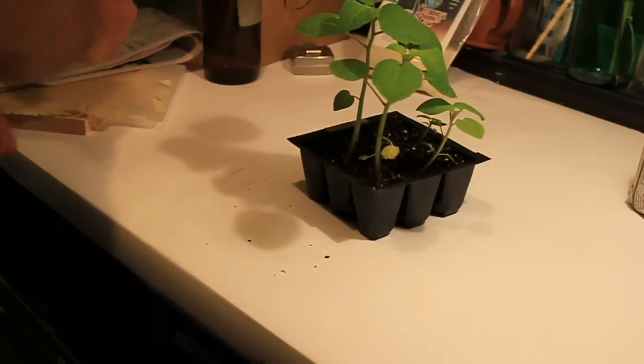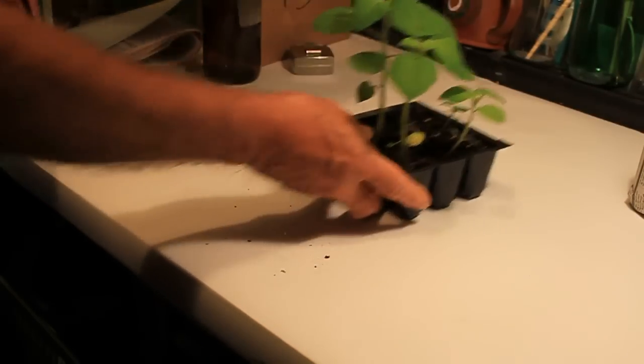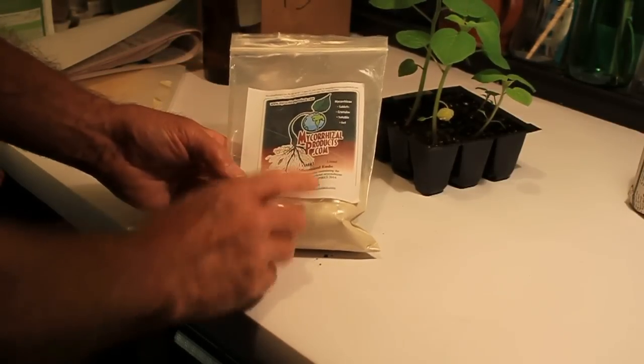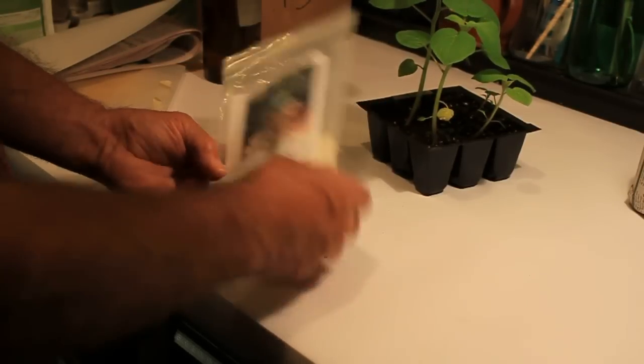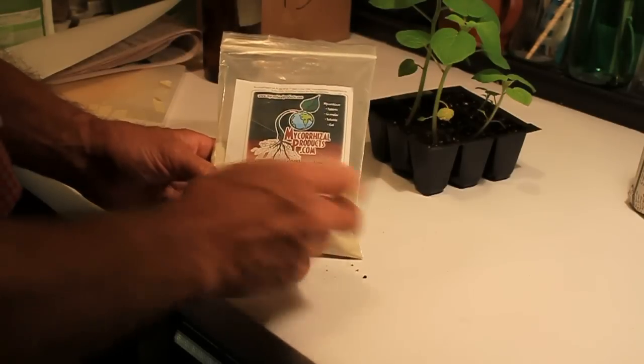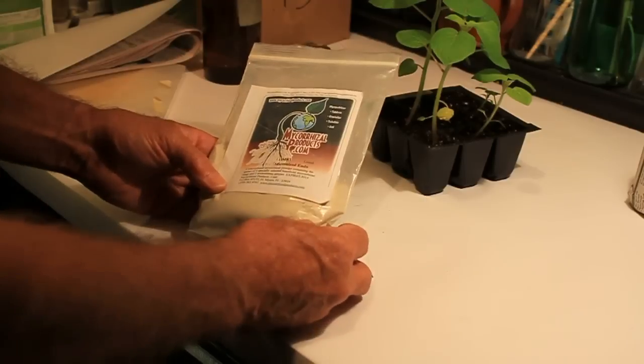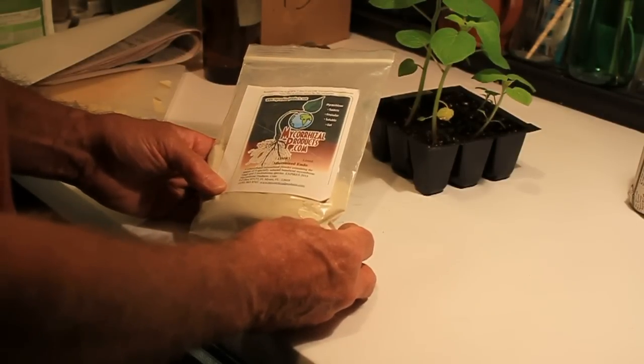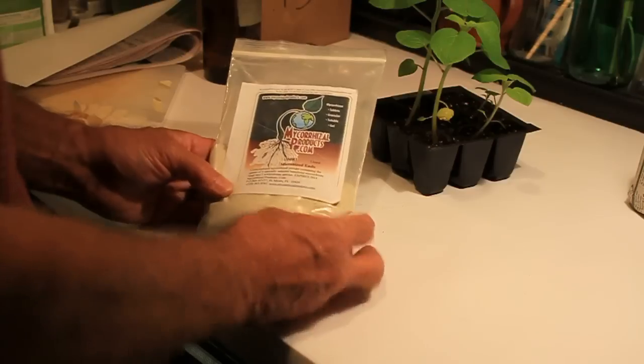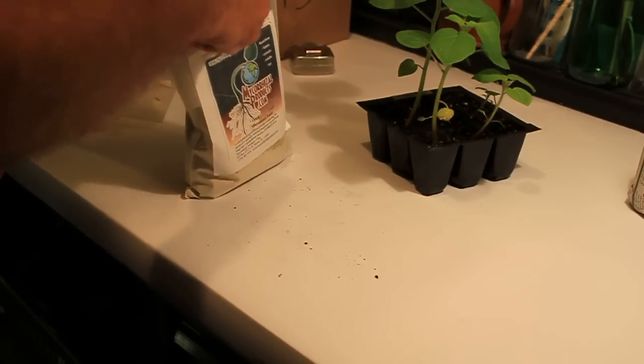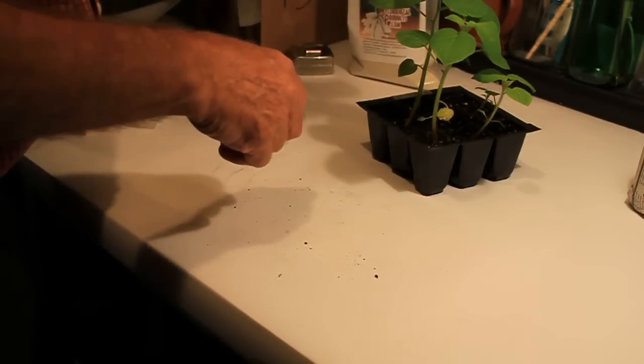The other thing I like to do is use something called mycorrhizal products. And when I repot them I'm going to sprinkle some of this on the roots. I'm going to use it dry. You can mix a little bit with water. If you've got a lot of plants and you want to spray the roots real quick. And this is concentrated mycorrhizal powder containing spores of four specially selected beneficial mycorrhizae. And I've noticed I think that makes your plants grow a lot better. So we're going to get that open and ready to go.